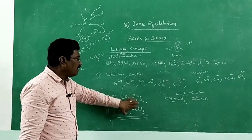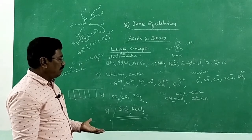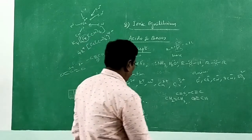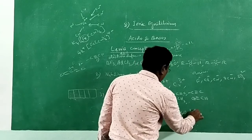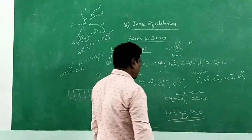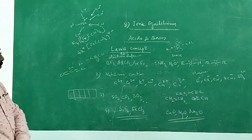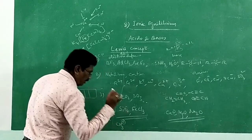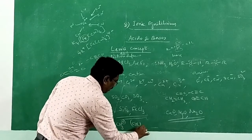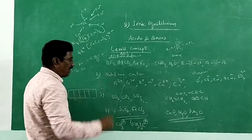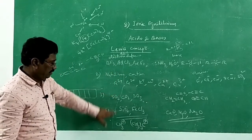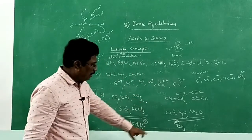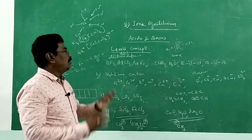Molecules which can create vacant d-orbitals or expand them can act as Lewis acids. Metal oxides such as CaO, MgO, and Na₂O can donate lone pair of electrons and act as Lewis bases. Carbocations — such as methyl carbonium ion and trimethyl carbonium ion — like metal cations, can act as Lewis acids because they accept electron pairs. Carbanions, which carry a negative charge by gaining an electron, can act as Lewis bases.